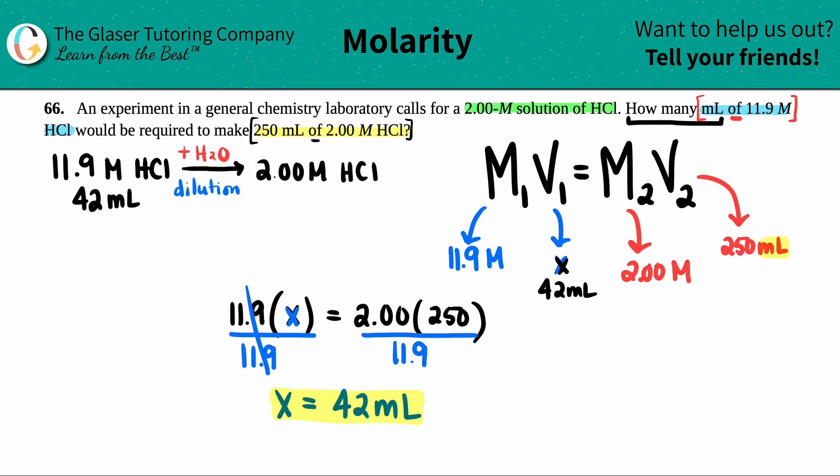If the final solution that I want is 250 milliliters, and I'm adding water, how do I get the difference between these two numbers? Yeah, all I'm doing is I'm adding water. So technically, if you wanted to find out how much water you actually added, you just subtract the two.